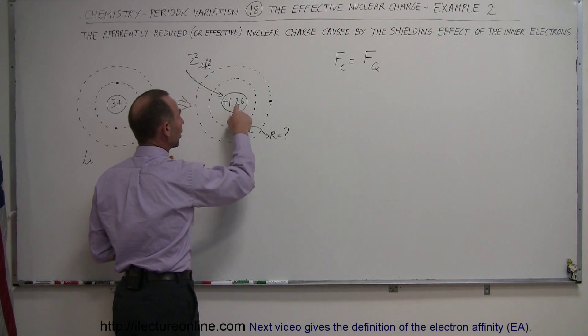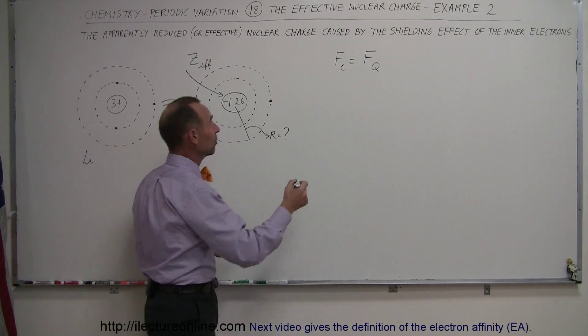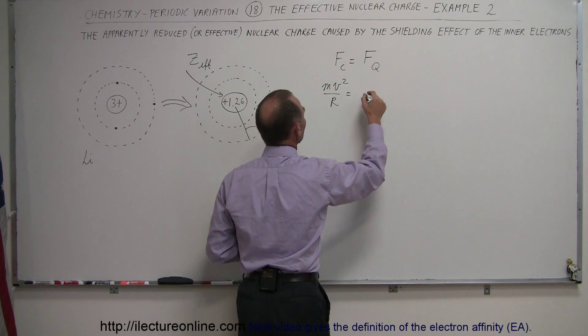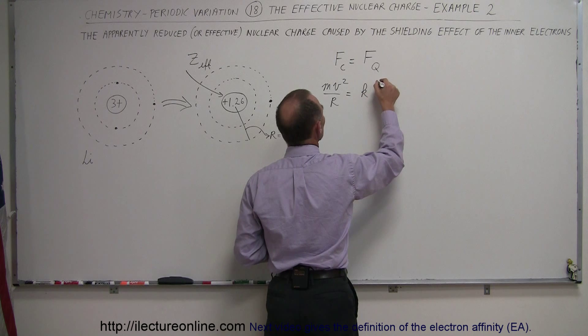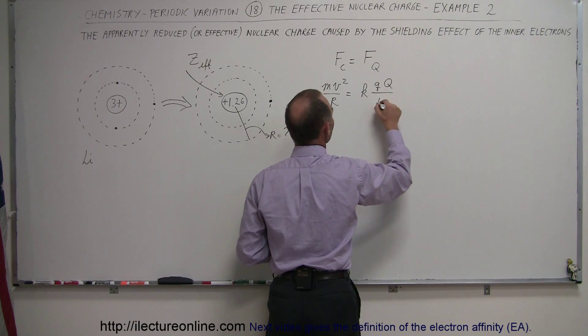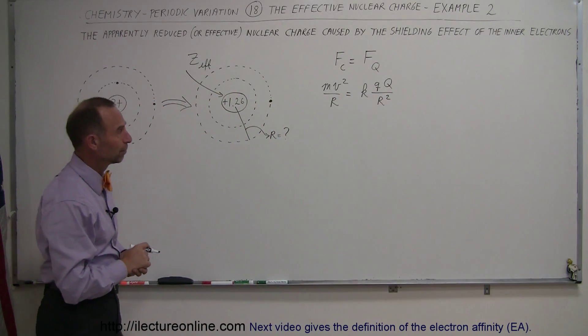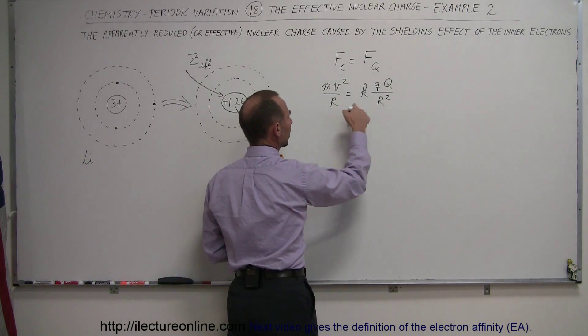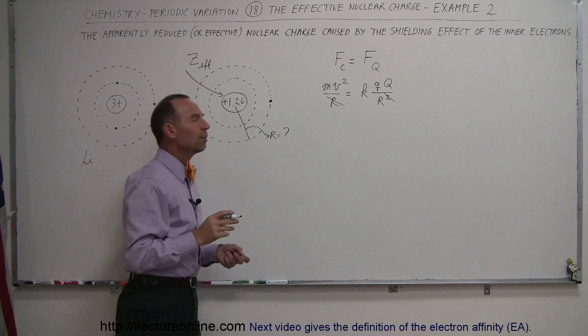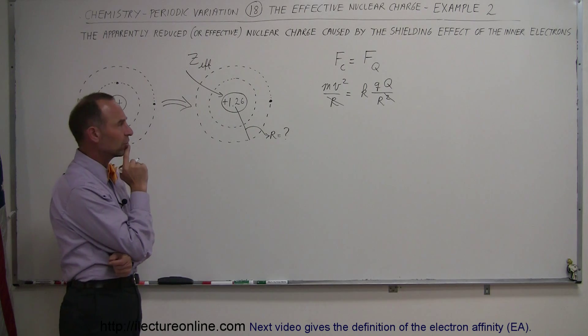So centripetal force can be written as mv squared over r, and the Coulomb force is equal to k times the charge of the electron times the charge of the nucleus divided by the distance between them squared. And so we have to take that equation and solve for r. Now you can see there's an r here, there's an r there, so this r cancels out that r. But the problem if I solve that equation for r is that I do not know what my velocity is.